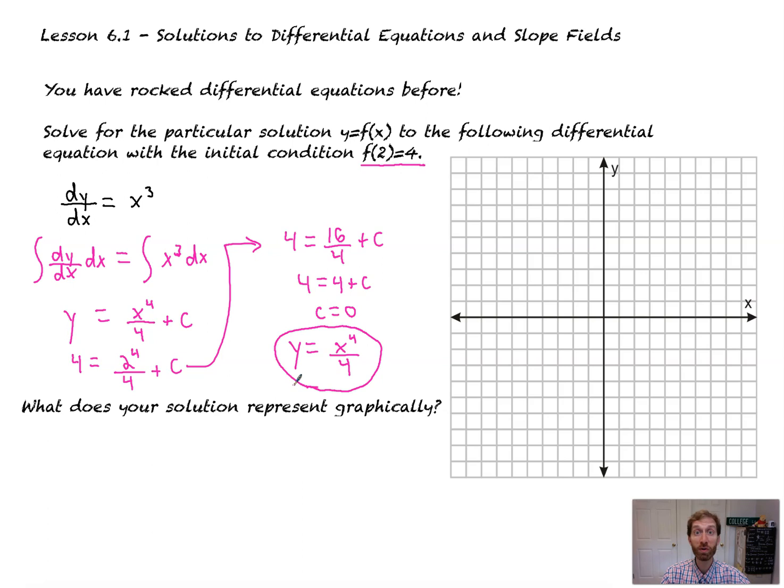And what does our solution represent graphically? Well, it's the graph of x to the fourth over 4, which is, again, this is just a very, very, very rough sketch, but something that goes up like this, like a rough sketch. Almost like a parabola, but a little bit steeper than that. The plus c there, if we didn't have the particular solution, would represent infinitely many of these parabola-like things shifted up and down. All right. And we've seen stuff like that before. So not bad.